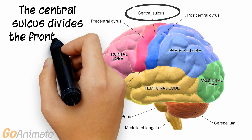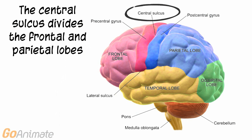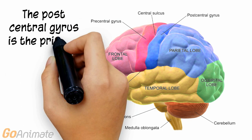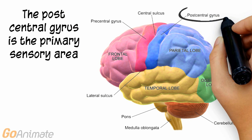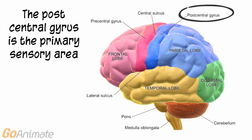The central sulcus divides the frontal and parietal lobes. The postcentral gyrus of the parietal lobe is known as the primary sensory area.